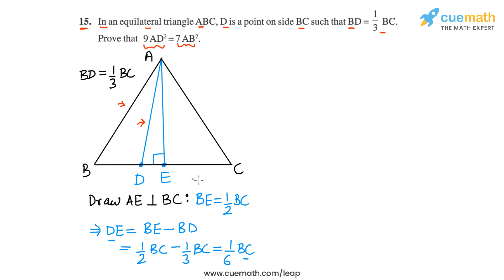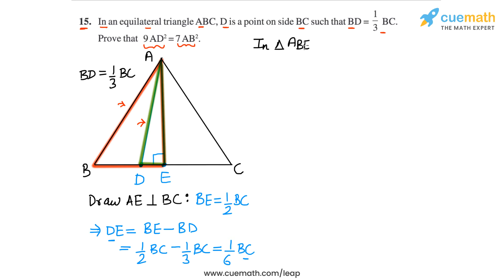Now let's apply the Pythagoras theorem to two triangles in this figure. First, I'm going to apply it to triangle ABE — that will give us an expression for AB squared. Then I'll apply it to triangle ADE — that will give us an expression for AD squared. Then we can relate AD squared and AB squared.